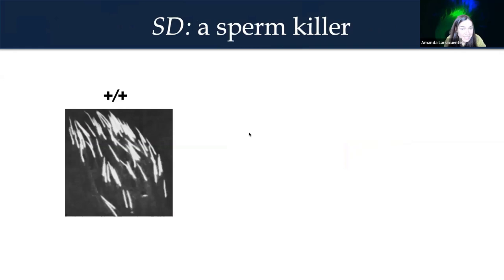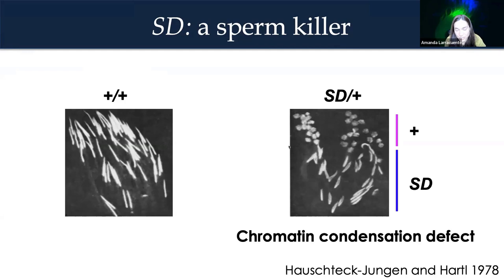SD is a sperm killer. Ordinarily, wild type sperm have nice needle-shaped sperm heads. But if you look inside the testis of an SD heterozygous male, half of the sperm have those nice needle-shaped heads while the other half are round blobs. The needle-shaped sperm are the SD sperm that will make it to the seminal vesicle and inseminate a female, while the wild type sperm don't mature and have no chance of inseminating a female. Somehow SD is disabling these wild type sperm through a chromatin condensation defect that we still don't really understand.